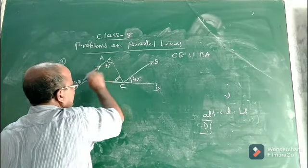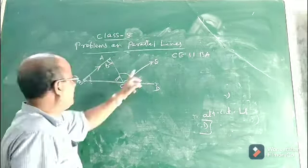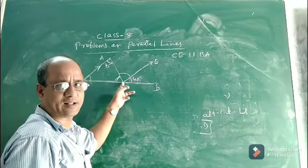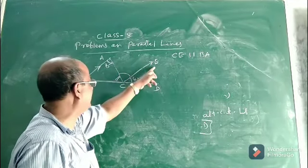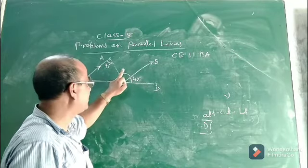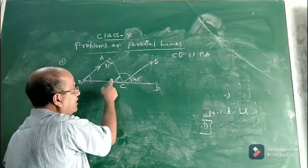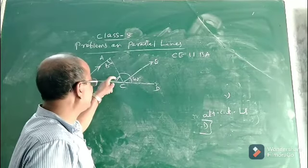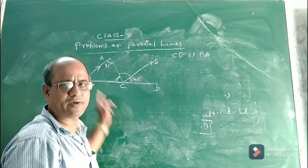There is also another way. Since CE is parallel to BA and AC is the transversal, angle ACE and angle BAC are alternate interior angles. So if angle BAC is 75 degrees, then angle ACE is also 75 degrees. Now 75 plus 40 gives 115 degrees total for those two angles, and angle ACB will therefore be 65 degrees — whichever method you find convenient, you can use.